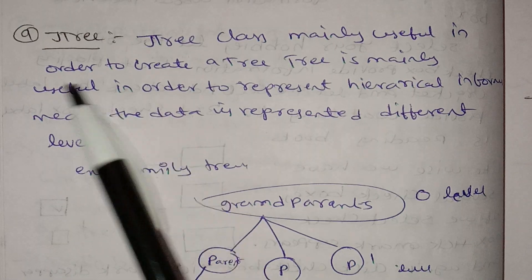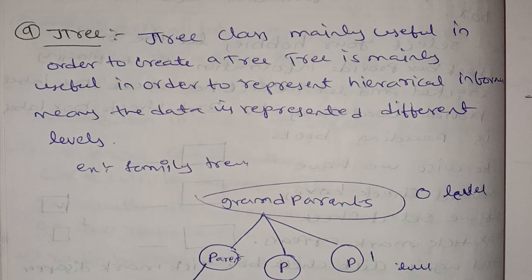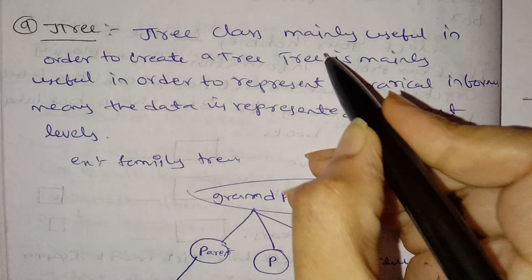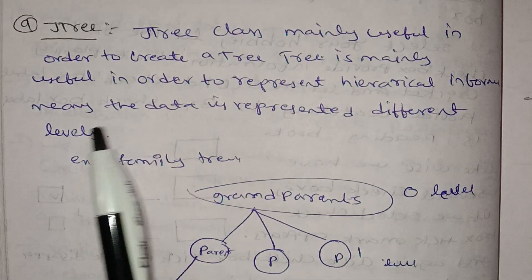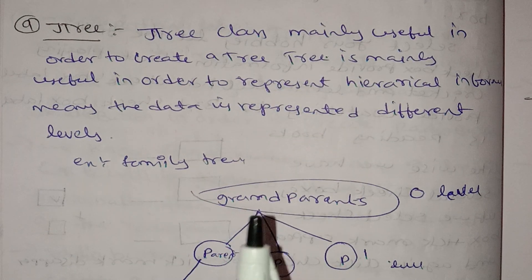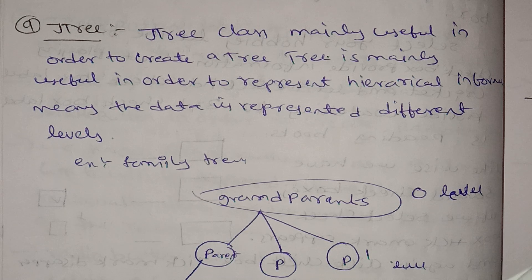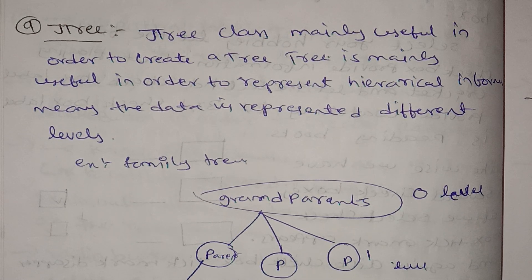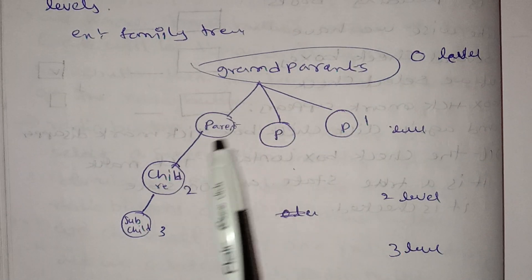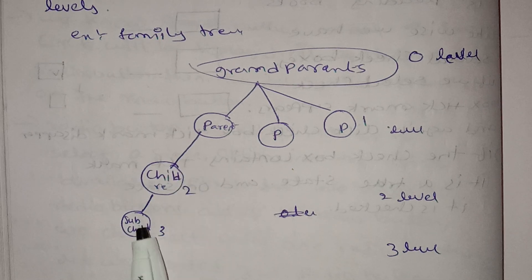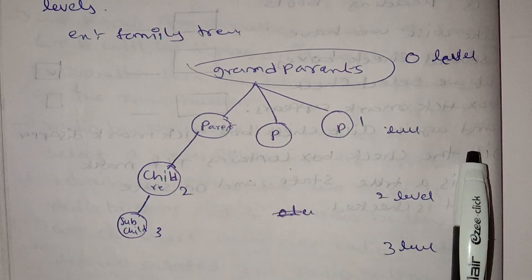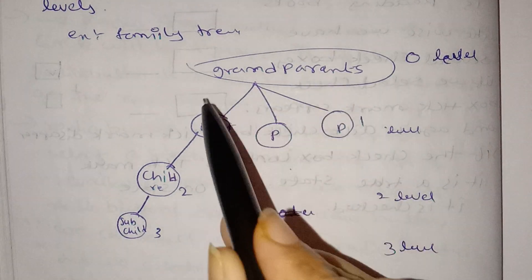JTree is mainly useful in order to represent hierarchical information, meaning the data is represented at different levels. For example, this is the grandparent at level zero, parents are at the first level, and children are at the second level. Then the third level is the next level — this is the level-by-level hierarchical structure.